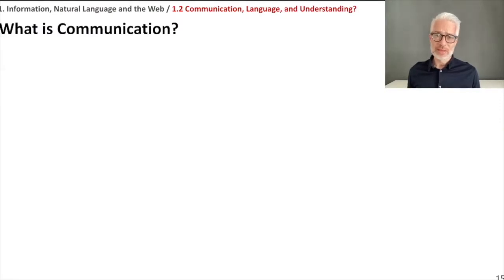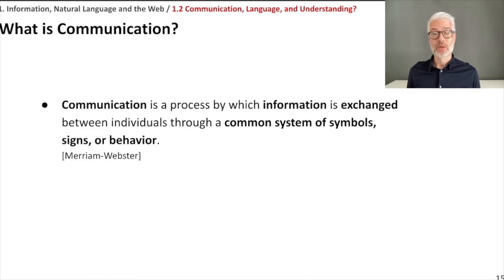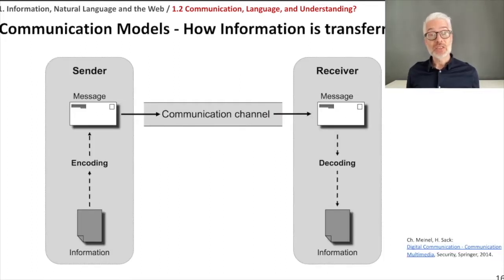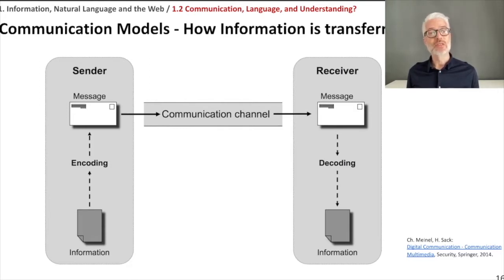So what is communication? Let's start with the dictionary definition. Communication is defined at Merriam-Webster's as a process by which information is exchanged between individuals through a common system of symbols, signs or behavior. This is the simple communication model. You have a sender and you have a receiver. The sender is also the information source, the receiver is the information target.